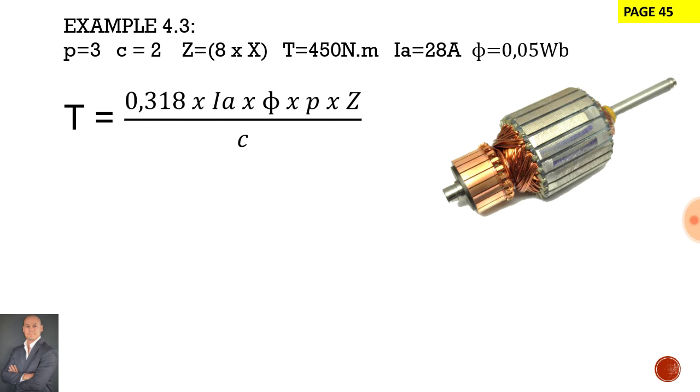So here's our formula on the sheet and we can see that is provided directly from our formula sheets. All we have to do is manipulate the equation, and the unknown factor in this equation is Z, which is the total number of conductors.